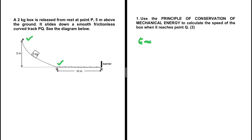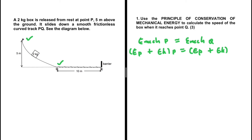We say that the mechanical energy at point P equals the mechanical energy at point Q. Mechanical energy is the sum of potential energy and kinetic energy. So: (mgh + ½mv²) at P equals (mgh + ½mv²) at Q.